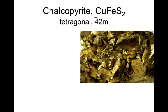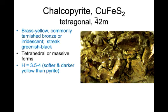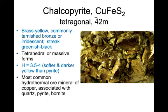Chalcopyrite is the chief ore mineral of copper, and it's CuFeS2, tetragonal. It's commonly brass yellow or tarnished bronzy or iridescent. It has a greenish-black streak and is relatively poorly crystalline in massive forms, and rarely tetrahedral shapes. Hardness is 3 to 4 — softer and darker yellow than pyrite — and it has a characteristic streak that pyrite does not. It's the most common hydrothermal ore mineral of copper, associated with quartz, pyrite, and bornite.